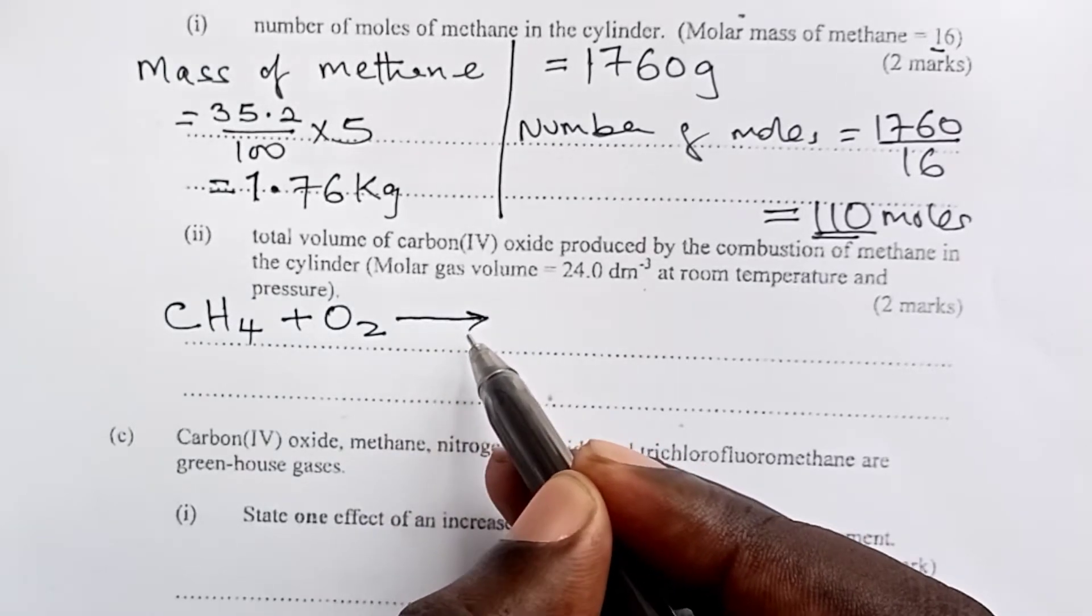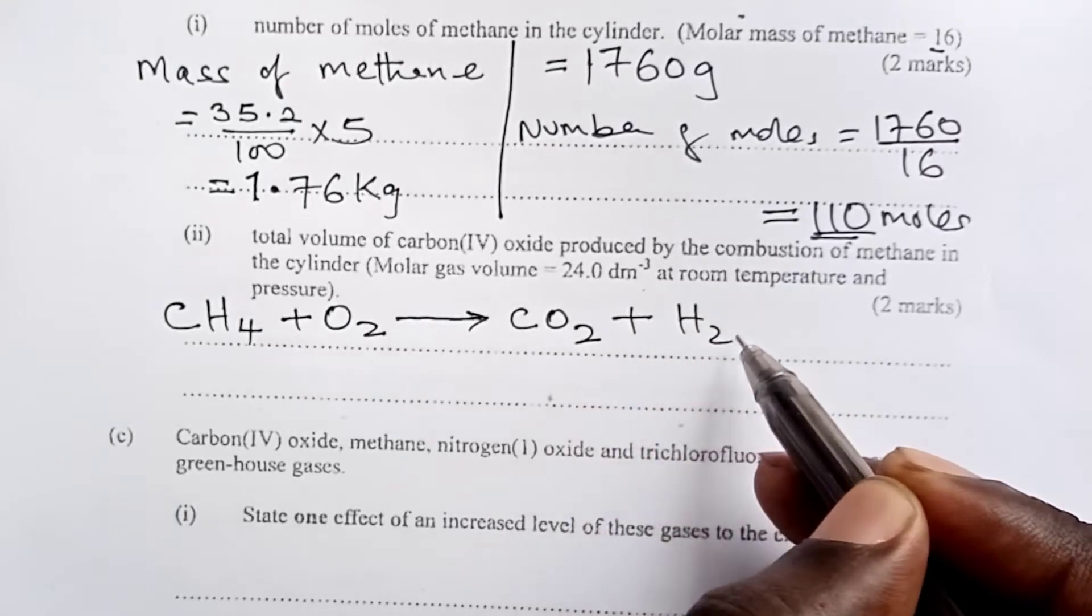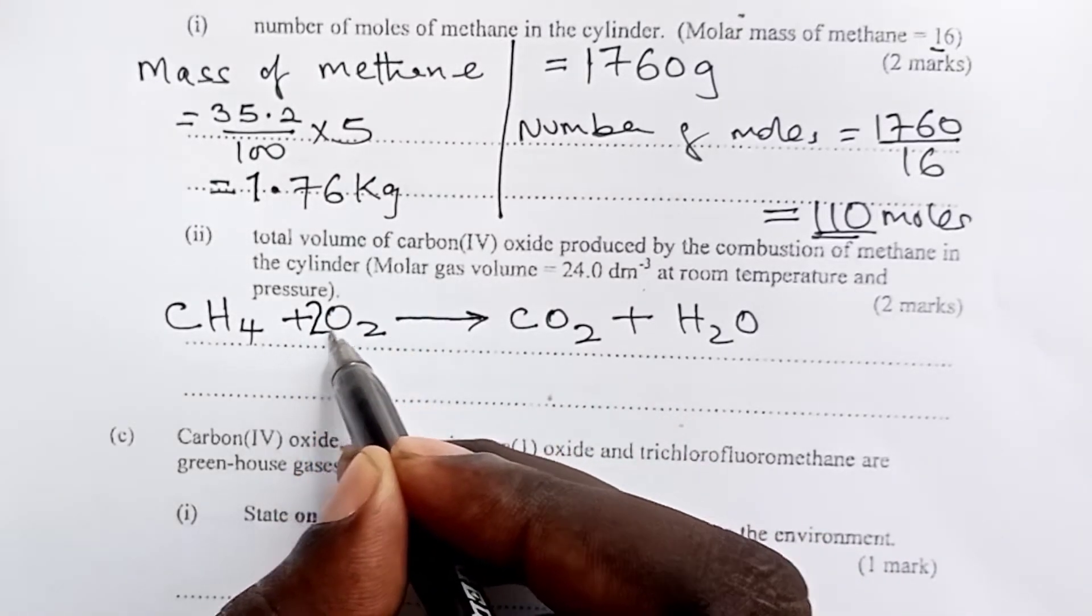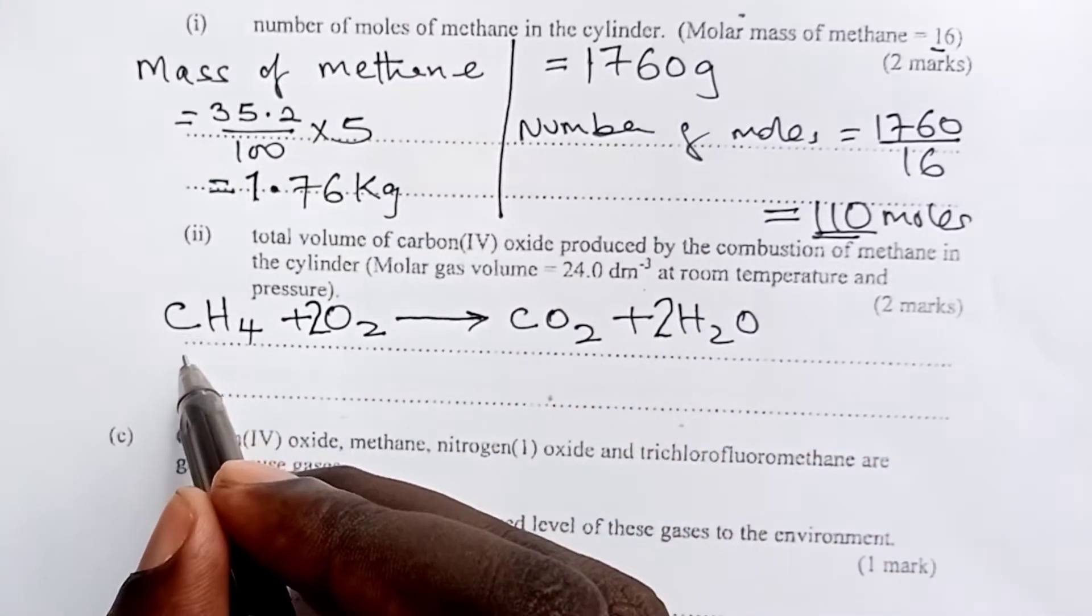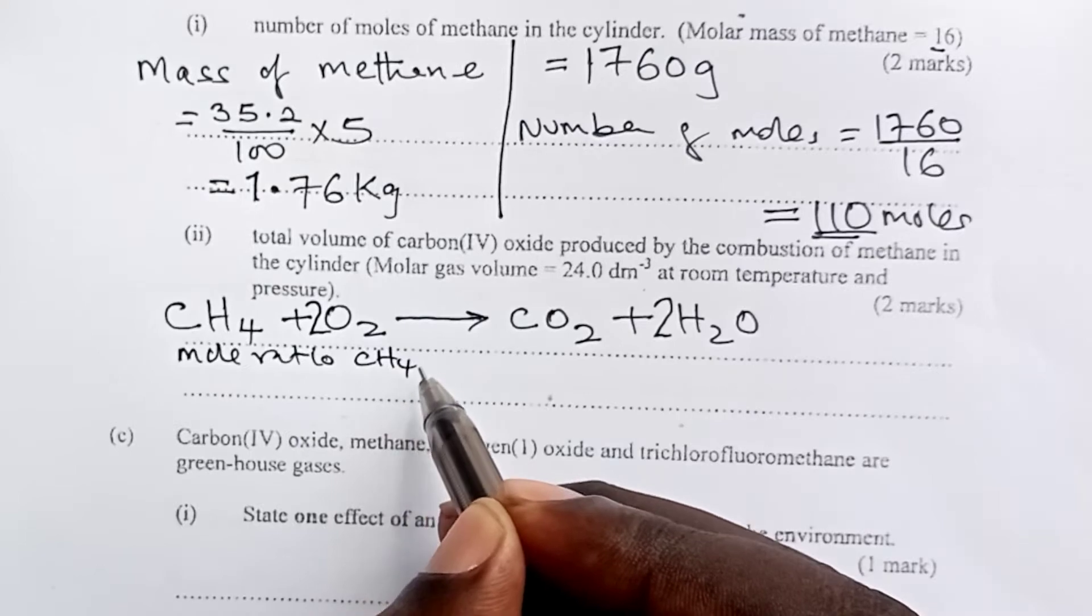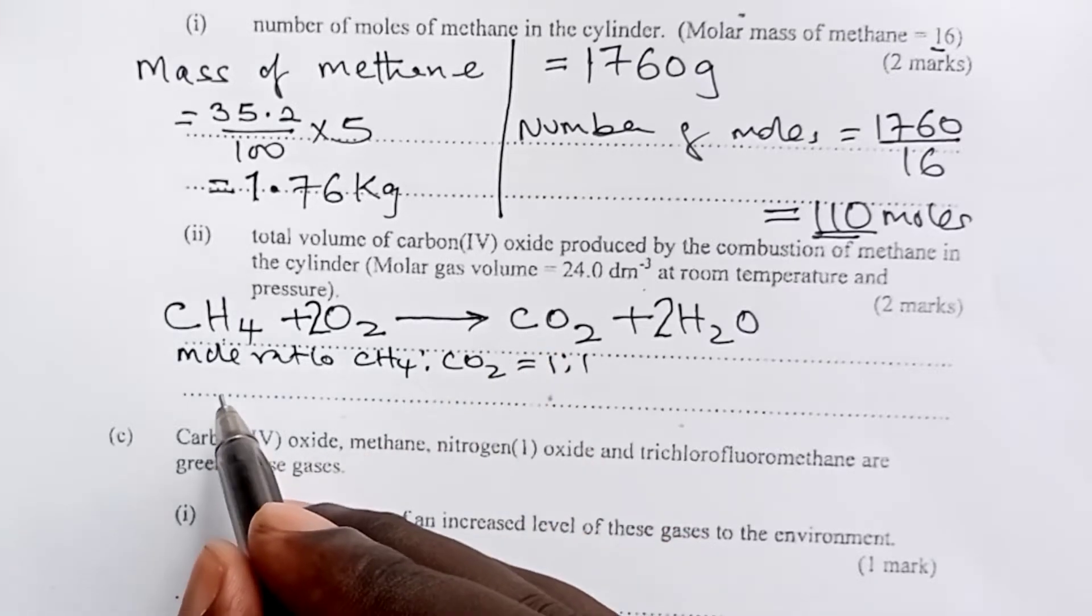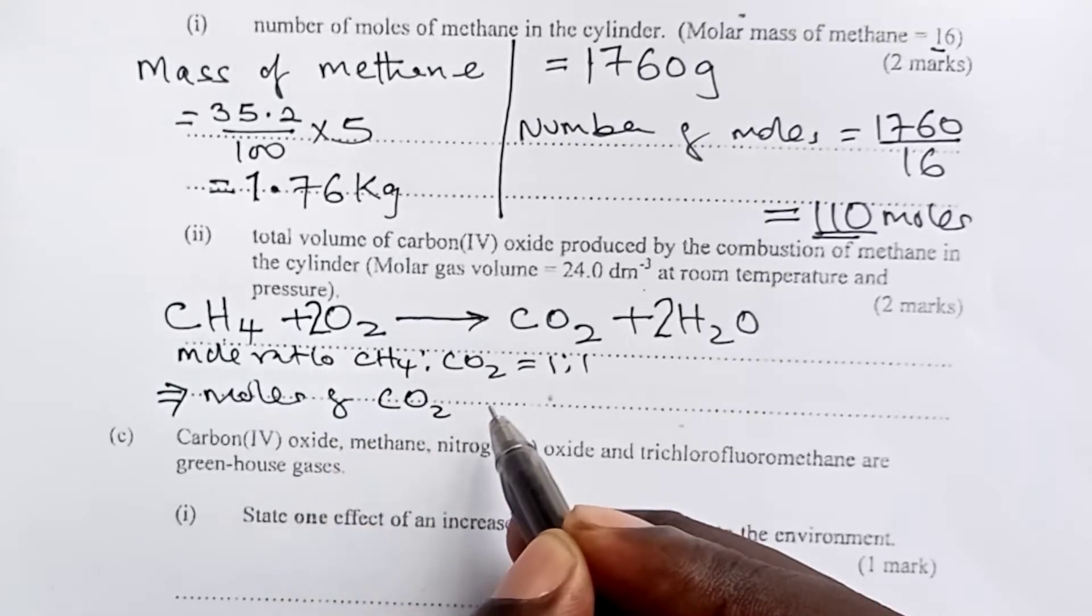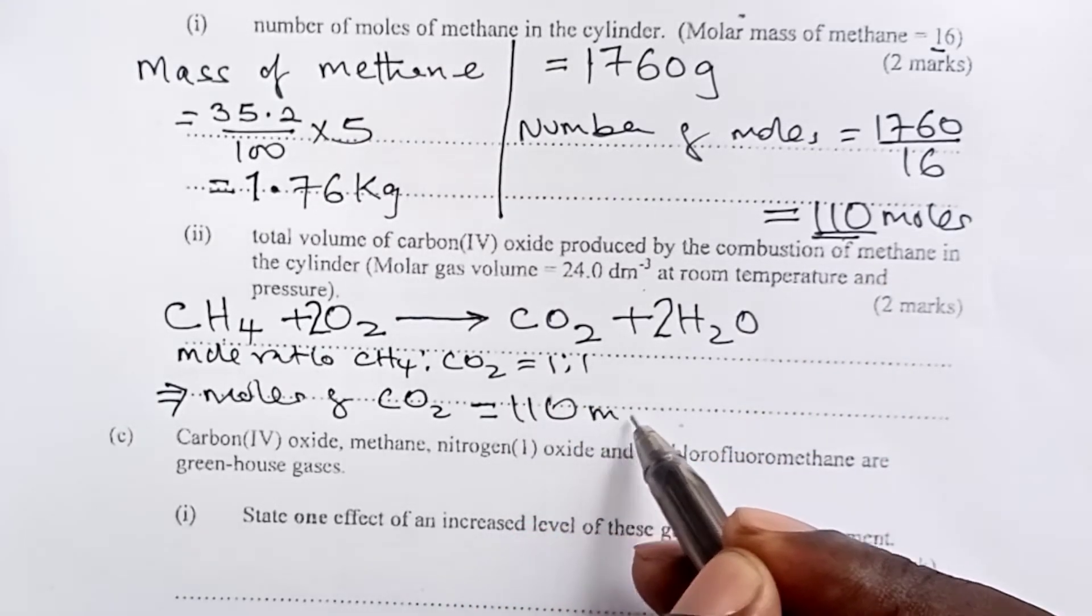So methane has the formula CH4. When you burn it in oxygen, we are bound to get carbon-4 oxide and steam or water. This, you balance using a 2 on oxygen and a 2 on water. So from here, mole ratio between our methane and carbon-4 oxide, we can see from the equation is 1 is to 1. So this means that moles of carbon-4 oxide would be the same as the ones we calculated here. And that is 110 moles.